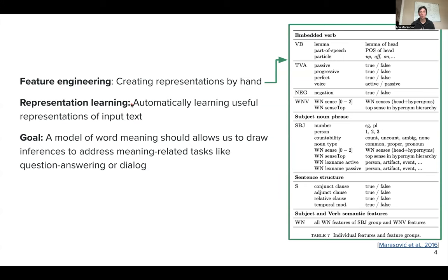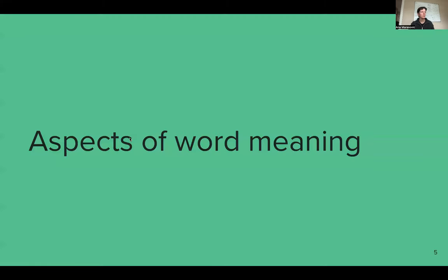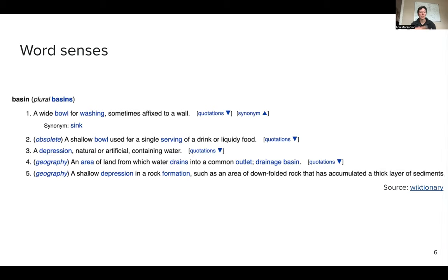I want to emphasize the word 'automatically' — you are not imposing what you think as a designer should be useful. Rather, the creation of important features happens in an automatic way. Representation learning is a whole field; there is a workshop on representation learning. The word 'representation' is a very technical term: if someone asks what is a representation of this text, they mean how you are turning your string into something like a vector. What we want is a model of word meaning that allows us to draw inferences and address meaning-related tasks like question answering or dialogue.